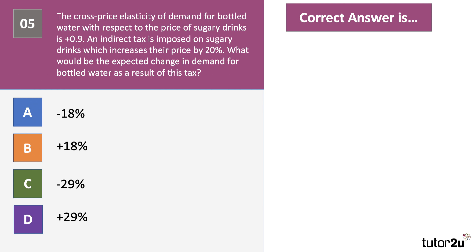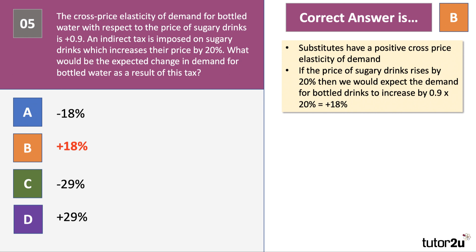Question 5: the cross-price elasticity of demand for bottled water with respect to the price of sugary drinks is found to be plus 0.9. An indirect tax is imposed on sugary drinks, increasing their price by 20%. What is the expected change in demand for bottled water? Substitutes have a positive cross-price elasticity of demand. As the tax raises the price of sugary drinks, consumers substitute toward bottled water. We'd expect demand for bottled water to increase by 0.9 × 20% = plus 18%. The correct answer is B.